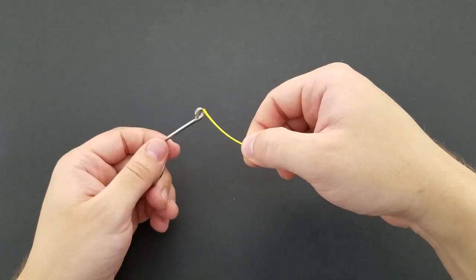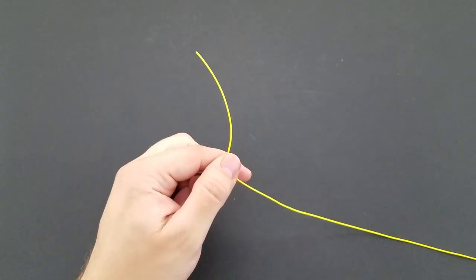With your line in one hand and your hook in the other, go and place the tag end through the eye of the hook. Give yourselves about 8 to 10 inches here to work with.